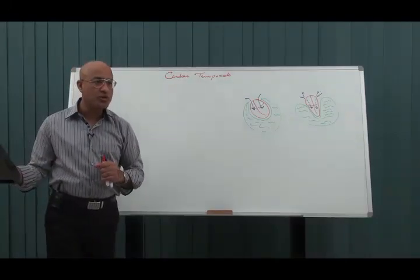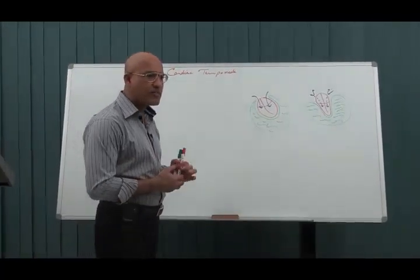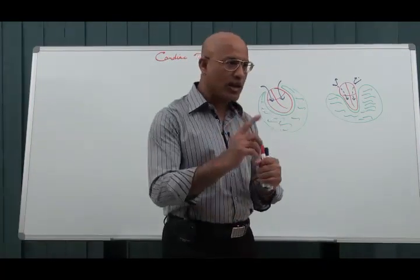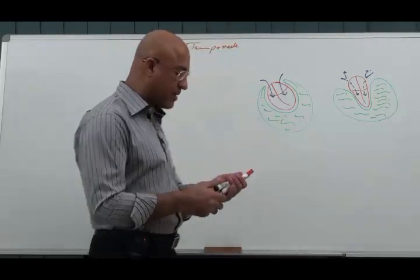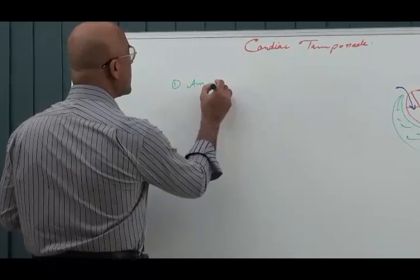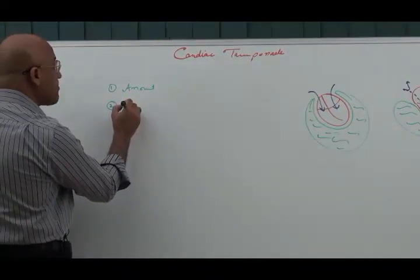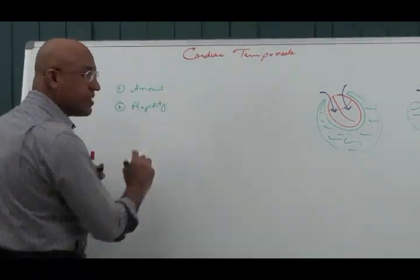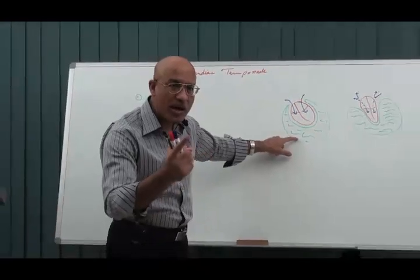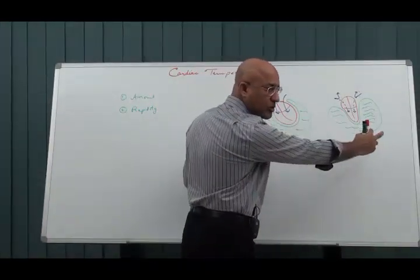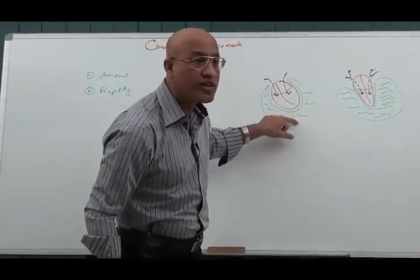How much pericardial fluid must be present to produce tamponade? The answer is that it is not really about the amount of fluid. Tamponade depends on three factors: the amount of fluid, the rapidity with which fluid is accumulating, and the compliance of the pericardium. More important than amount is the speed with which fluid accumulates.